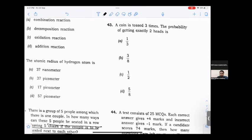A coin is tossed 3 times. Total outcomes are 2 raised to power 3, which is 8. Probability of getting exactly 2 heads: possible outcomes are head-tail-head, head-head-tail, and tail-head-head. That's 3 outcomes. So probability is 3 divided by 8.